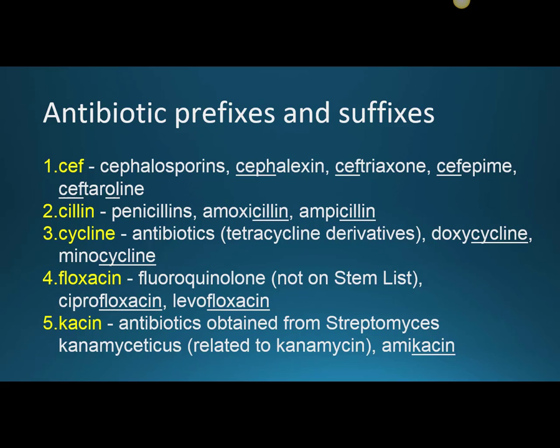CYCLINE is the tetracycline-type antibiotic stem. Sometimes you'll see it cut short to -LINE or just -ENE — both are incorrect. It has to be the full C-Y-C-L-I-N-E to identify a tetracycline class antibiotic. Tetra means four, referring to four rings in the organic chemistry structure.